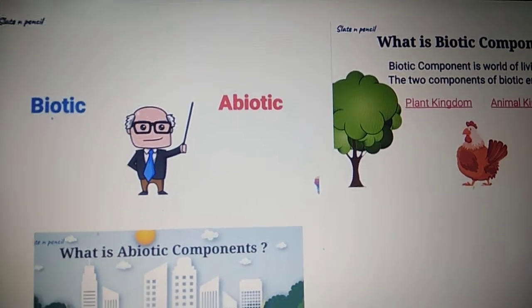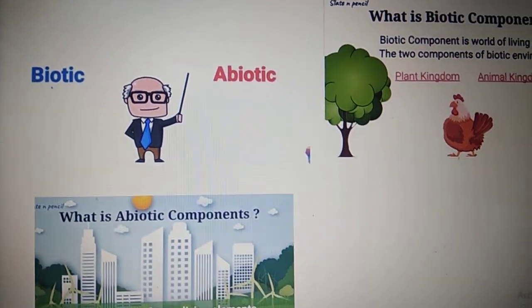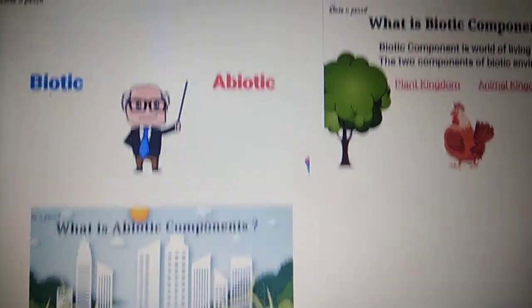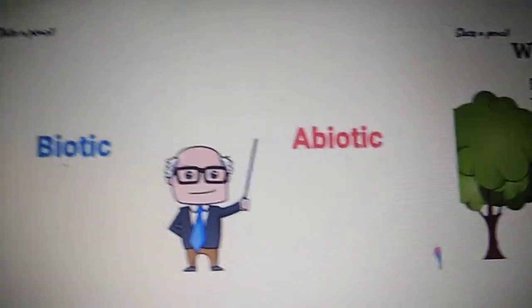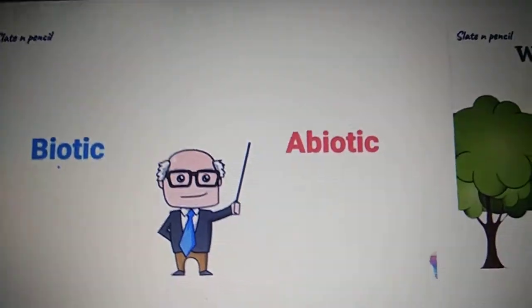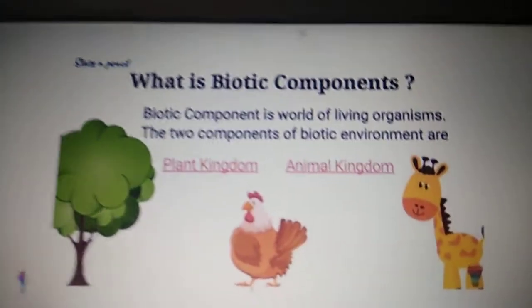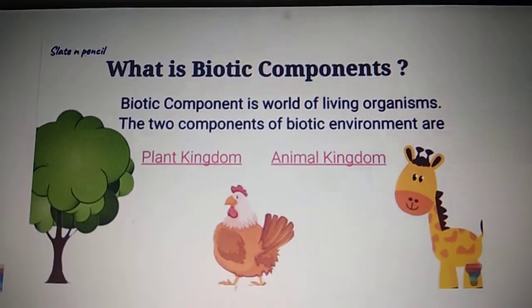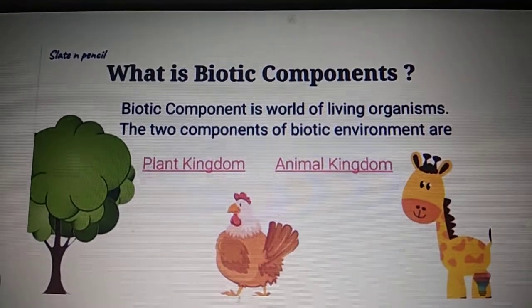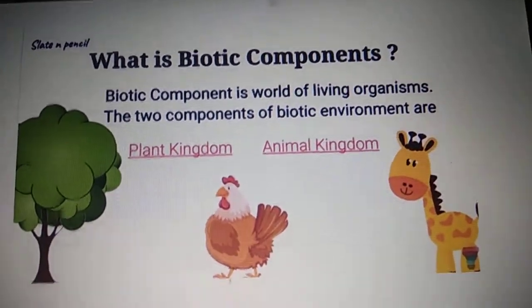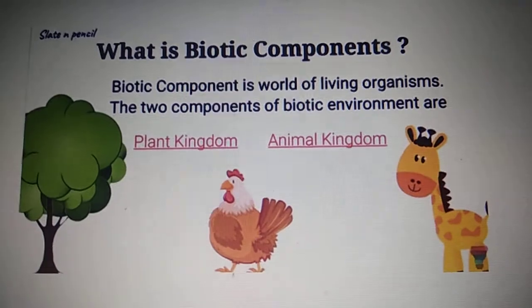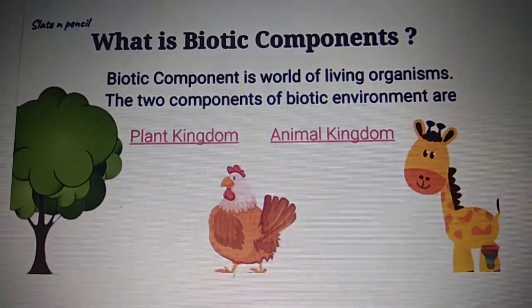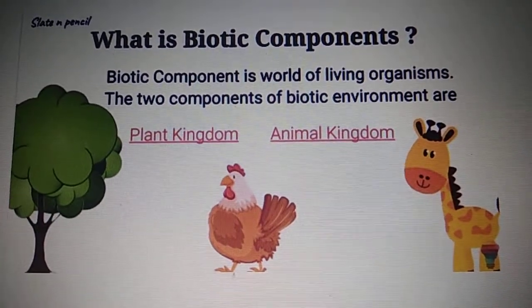Children, we see that the environment consists of biotic and abiotic components. What are biotic components? A biotic component is a world of living organisms where life is there. And there are two types: plant kingdom and animal kingdom.